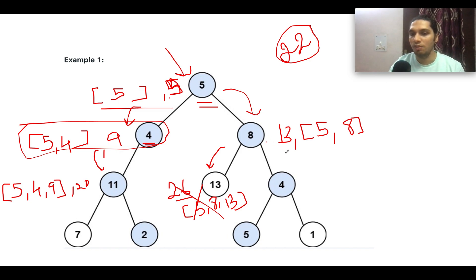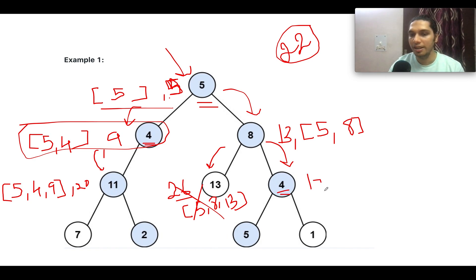Moving to the right direction from node 8's right child, we have node 4. So 13 plus 4 gives 17, and our running list gets updated to [5, 8, 4].